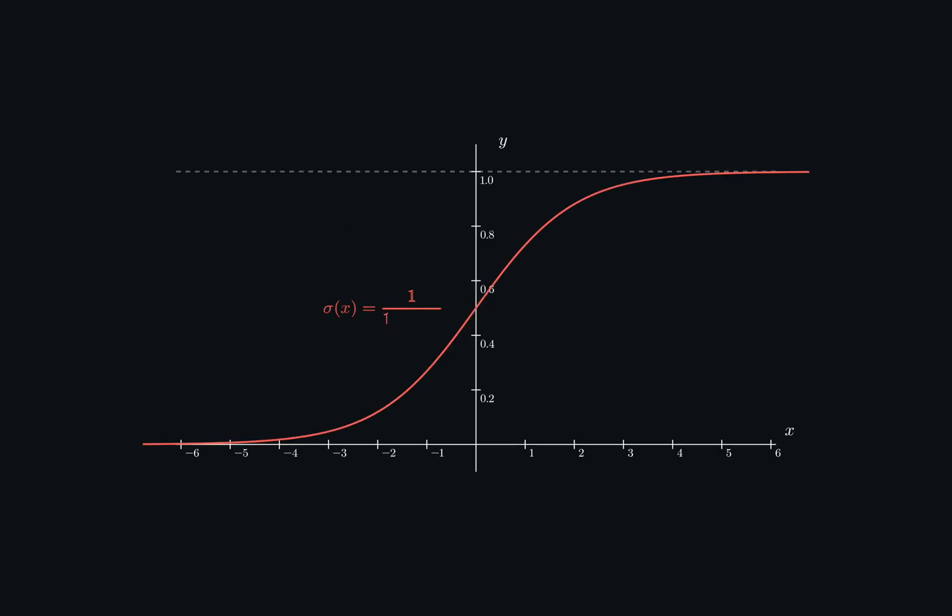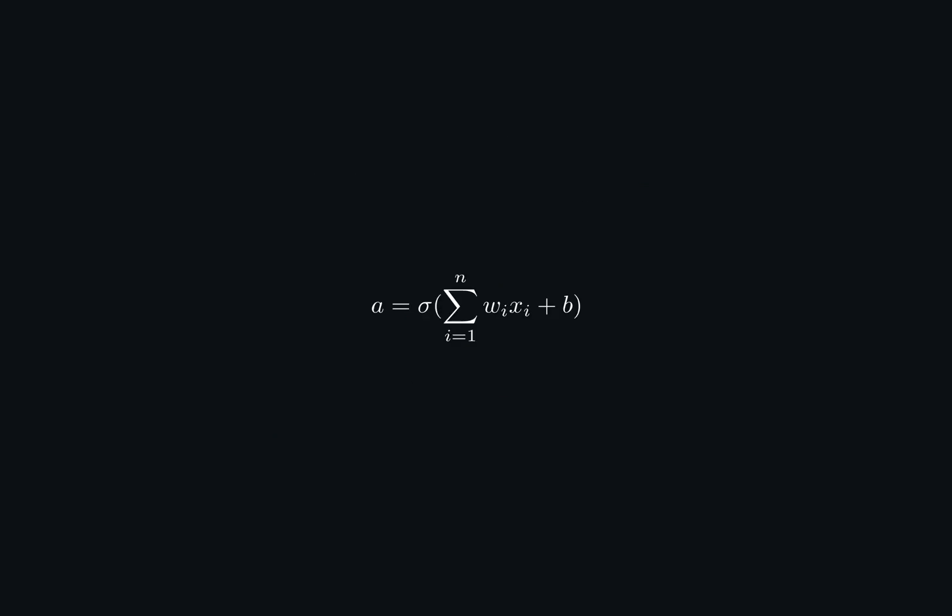Functions like sigmoid only output values between 0 and 1, making it useful for binary classification problems, as they can output a probability value. So, this is the complete neuron formula. The output of a neuron can be sent to multiple other neurons. The formula stays the same, just the input x is replaced with the output of another neuron, a.